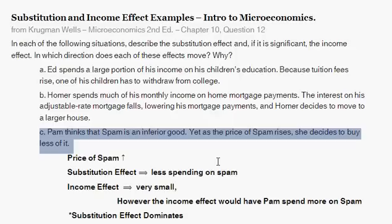However, the income effect is going to be very negligible — very small — because Pam probably doesn't spend a large portion of her income on spam. But the income effect of the price of spam going up would have her increase her consumption of spam. Because the price of this product goes up, she has lower purchasing power, which effectively makes her poorer. However, spam is an inferior good, so with less income, one increases consumption of it. So the income effect would have Pam want to spend more on spam, but it's probably really small. Overall, as stated, Pam decides to buy less of it — the substitution effect is dominating.